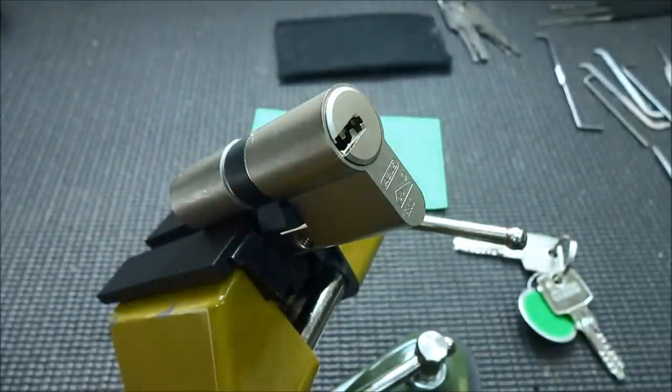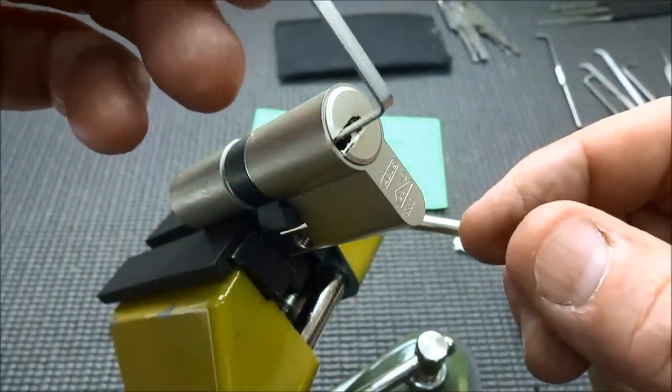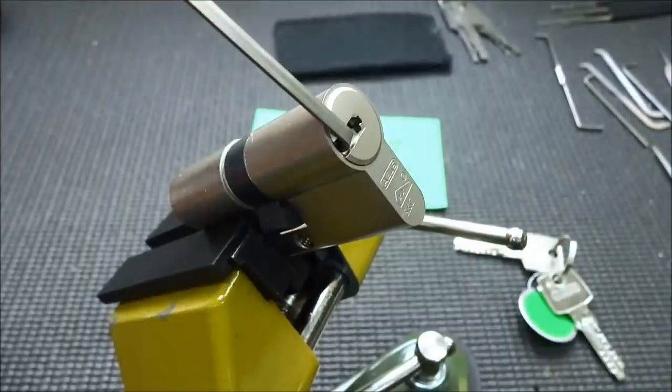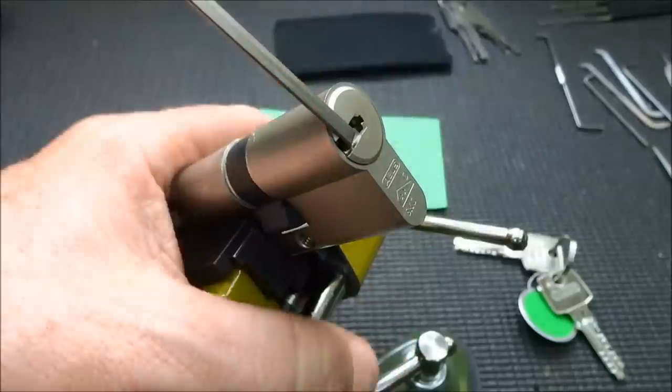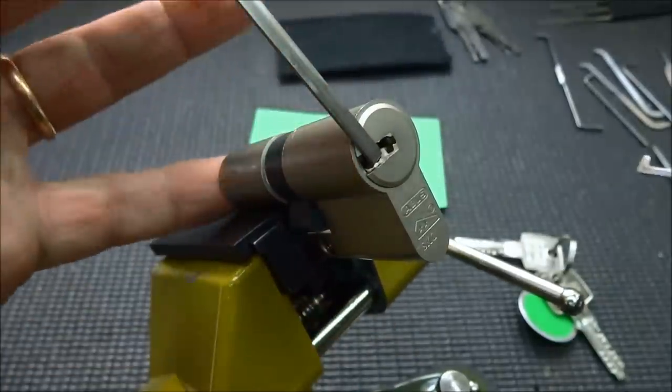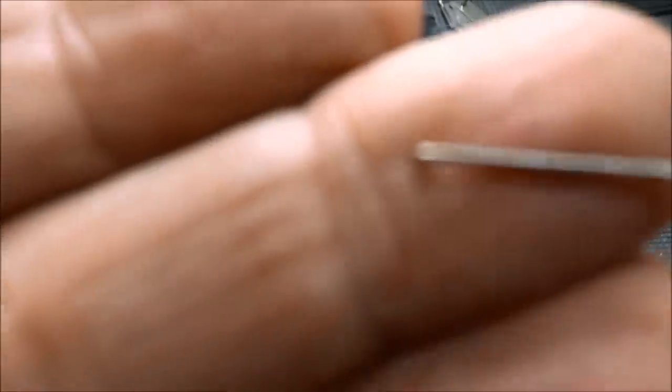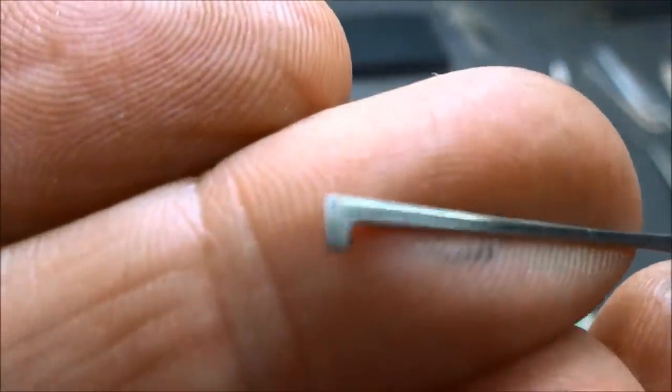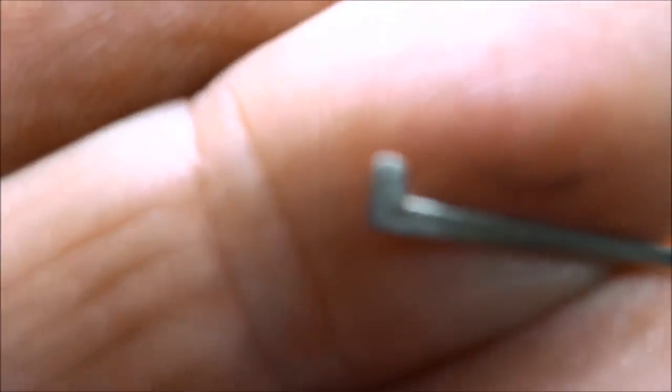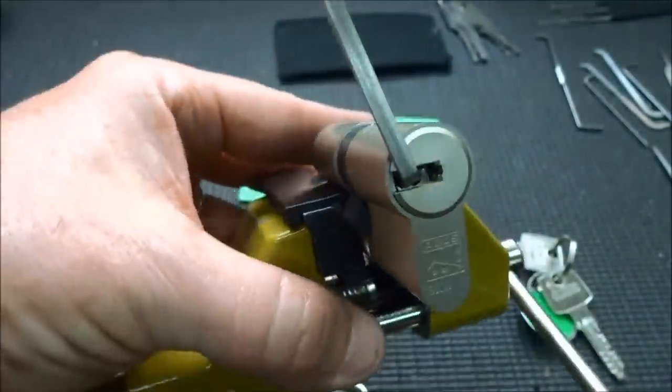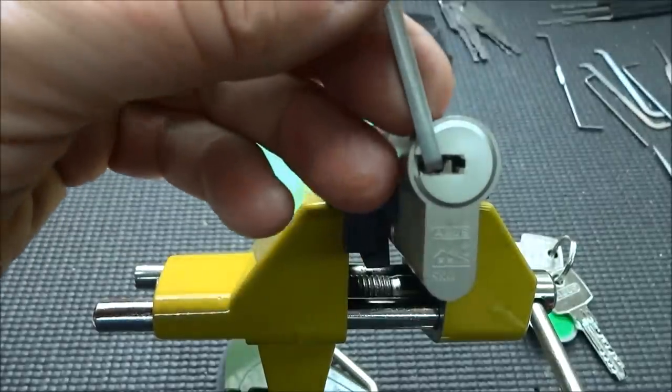I'm going to use a normal flat flag, no curvature at all on it because we really don't need it. I'm going to position my tension wrench in there so I can use the tension wrench as a guide to position it perfectly.